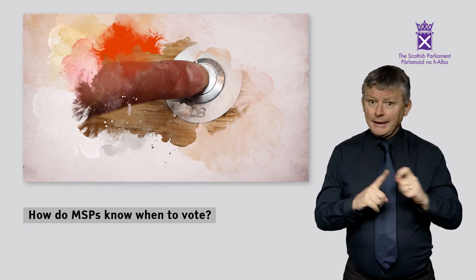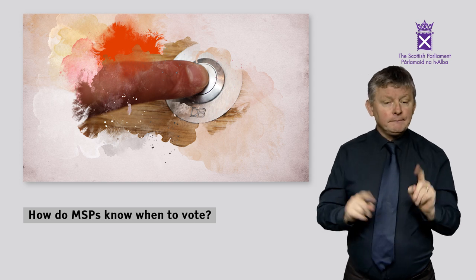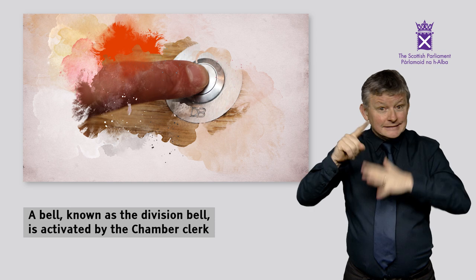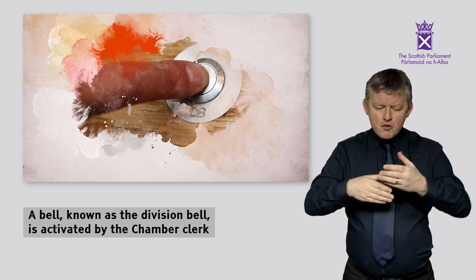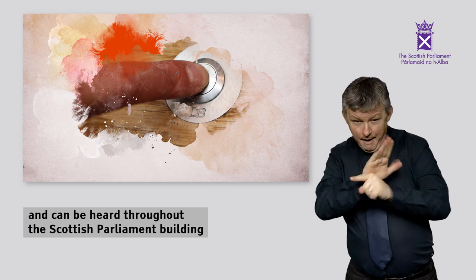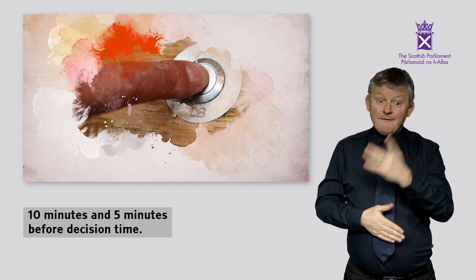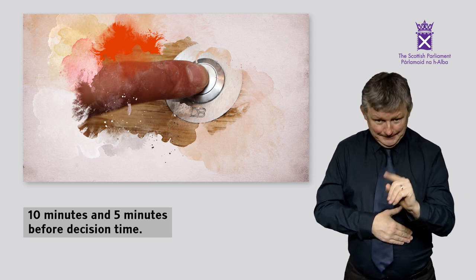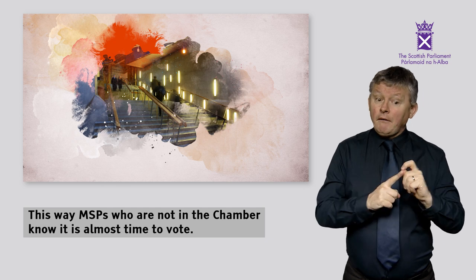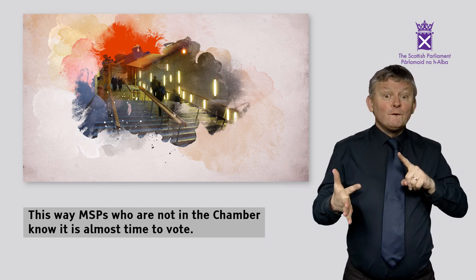How do MSPs know when to vote? A bell, known as the Division Bell, is activated by the Chamber Clerk and can be heard throughout the Scottish Parliament Building ten minutes and five minutes before Decision Time. This way, MSPs who are not in the Chamber know it is almost time to vote.